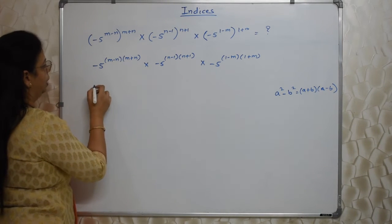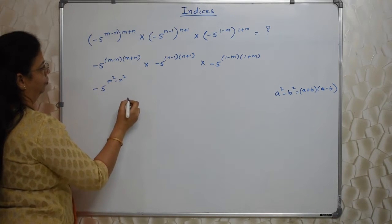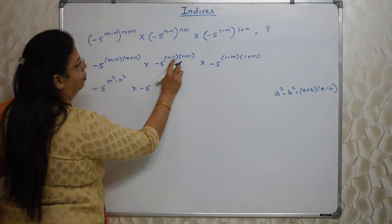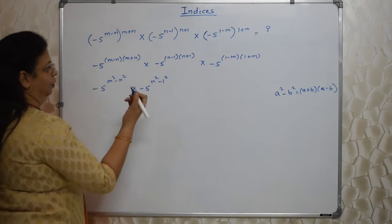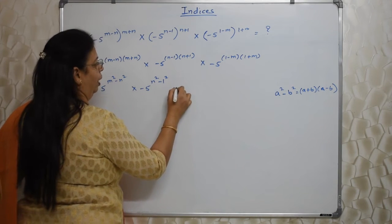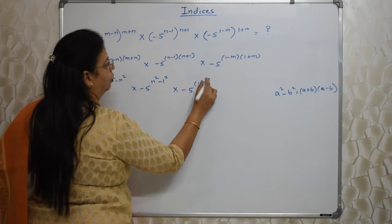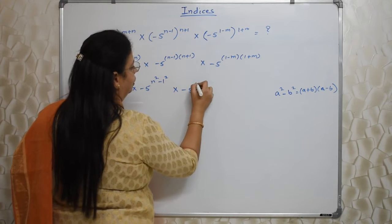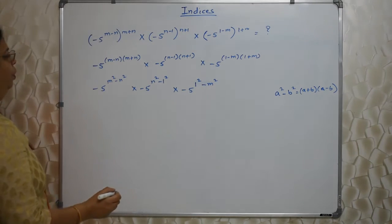If you know this, immediately you will come to know (m-n)(m+n) means this is nothing but m² - n². Similarly here, (-5)^(n-1)(n+1) means n² - 1². Means 1 only, but I am writing it square. Again (-5)^(1-m)(1+m), that is 1² - m².